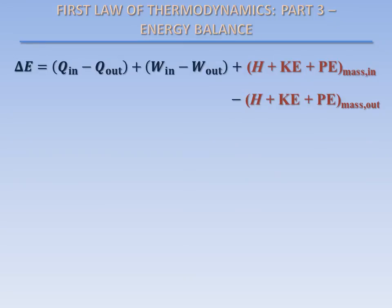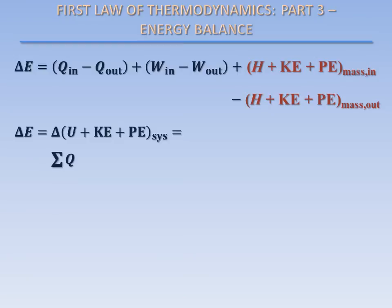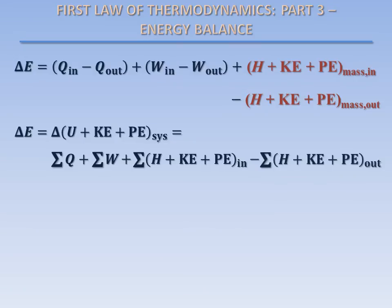We can now update our original energy balance with these new expressions for the energy flowing into and out of our system with mass. We will rewrite the energy balance in a more general form. The change in total energy of a system during a process, which equals the change in the sum of the internal energy, kinetic energy, and potential energy of the system, is equal to the sum of all heat transfer interactions with the system, plus the sum of all work interactions with the system, plus the sum of all of the energy contained in the mass flowing into the system, minus the sum of all of the energy contained in the mass flowing out of the system.